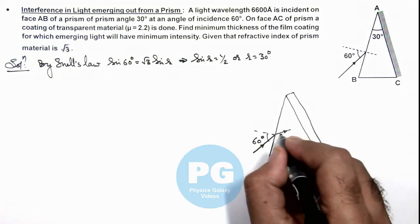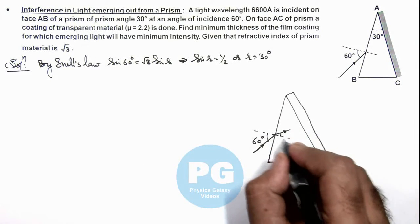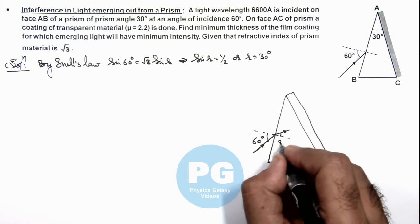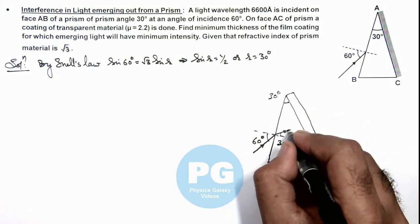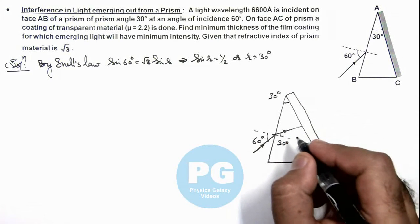That means the light enters at an angle of refraction r which is 30 degree. As the prism angle is also 30 degree, we can say the light will be incident on this face normally.